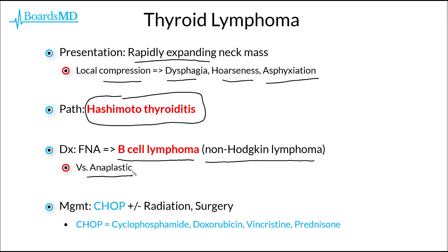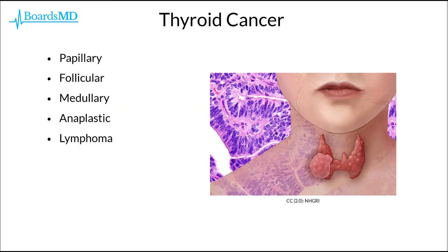In order to manage patients with thyroid lymphoma, we can utilize CHOP — our chemotherapy regimen of cyclophosphamide, doxorubicin, vincristine, and prednisone. These patients may also benefit from radiation and surgery, although once again, this carries a poor prognosis. That'll do it for now in our discussion of these malignancies. If you can differentiate these various cancers of the thyroid and have a strong understanding of how to work up a thyroid nodule, then you will be in excellent shape for crushing these questions on your examinations. This is BoardsMD, and this is thyroid cancer.